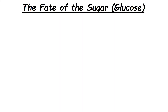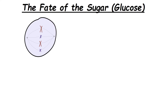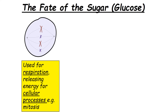The glucose produced has various fates, some of which you'll be familiar with. First, it can be used immediately for respiration — if you reverse the photosynthesis equation you get the respiration equation. The glucose can be used for respiration, producing ATP for cellular processes such as mitosis and active transport.